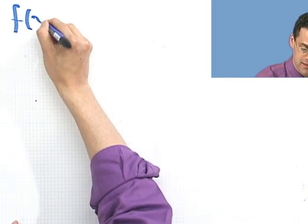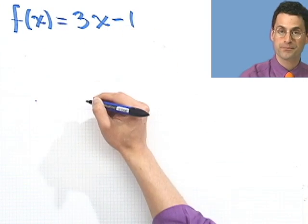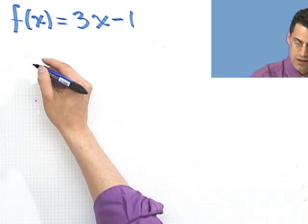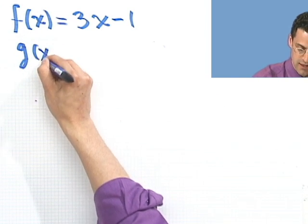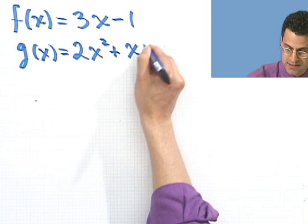Suppose I have two functions. So one of them, let's say f of x equals 3x minus 1. And suppose I have another one, I'll call it g of x, and that equals 2x squared plus x plus 1.